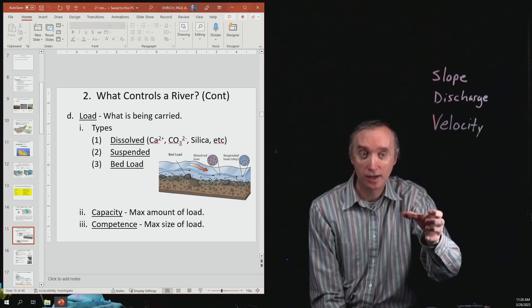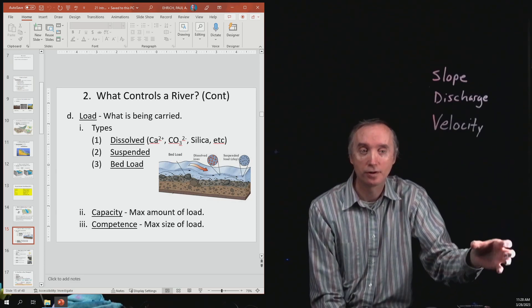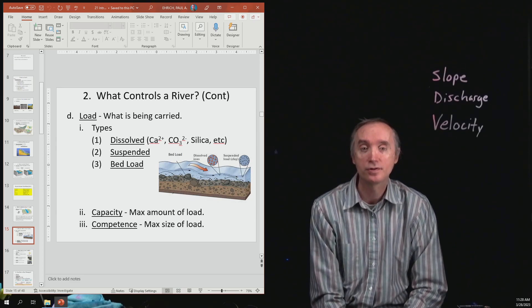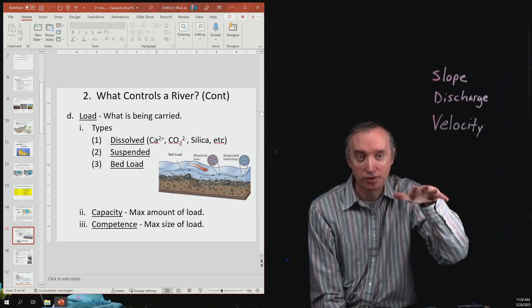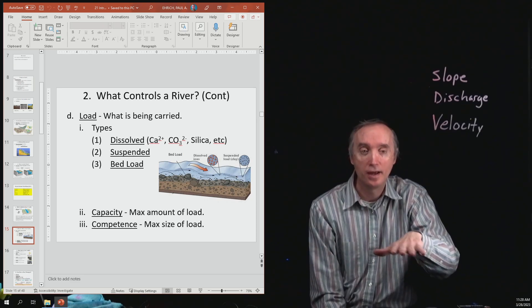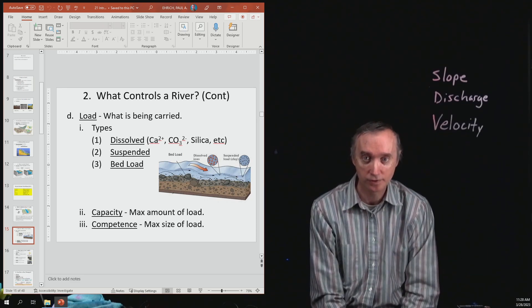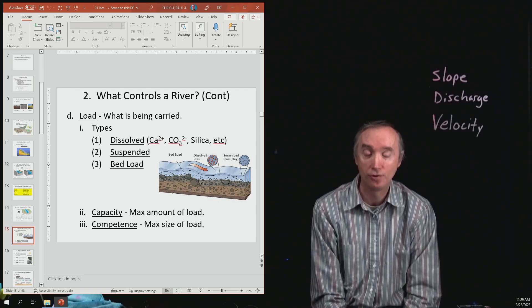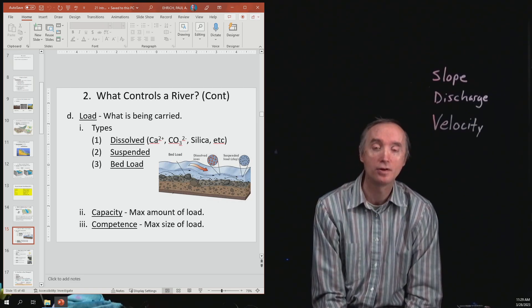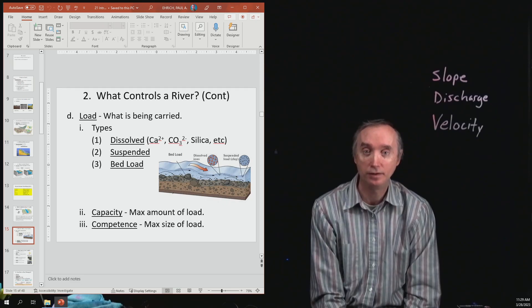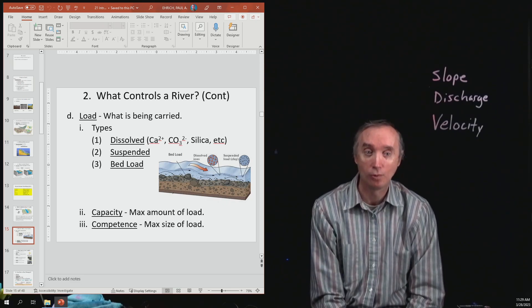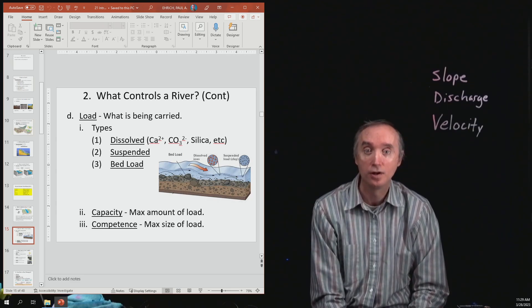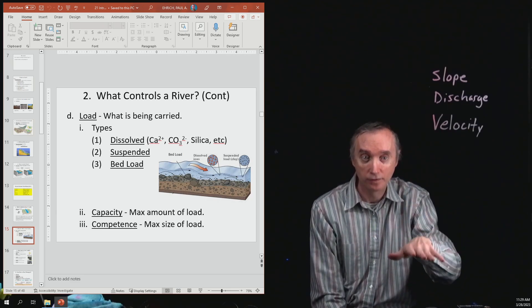Now if you take the glass and you put it on a shelf and you leave it there for a few hours, you'll notice that the silt and clay are going to start to fall down and accumulate at the bottom of the glass. Suspended particles are normally, as long as the river has enough speed, they're going to be suspended in the water. But then as the river slows down, those suspended particles are going to fall out.